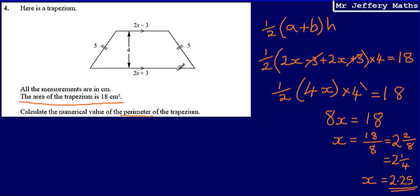Then I can just add all the lengths together to give me the perimeter. So this first one, well, 2 times 2.25 minus 3.